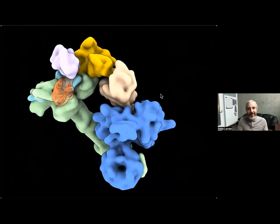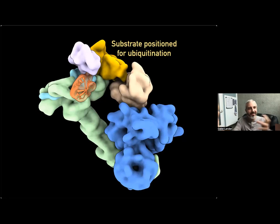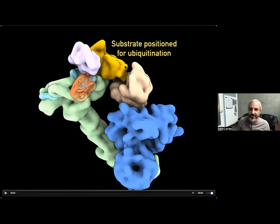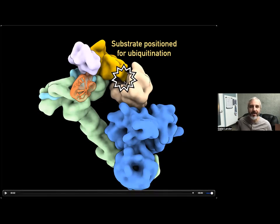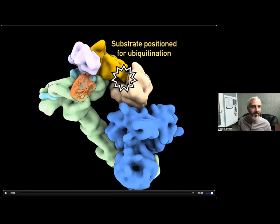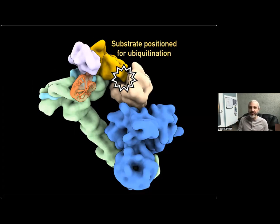That groove serves as a binding pocket for a slew of DDB1 and Cullin-associated factors, otherwise known as DCAFs. Each one of these adapter proteins has a hydrophobic appendage — usually a loop or helix — that docks into this binding pocket. This establishes the full adapter complex that can then bind the substrate that's going to be ubiquitinated. Understanding the detailed interactions occurring between substrates as they're positioned for ubiquitination gives us incredible power over targeting different types of proteins for subsequent degradation.